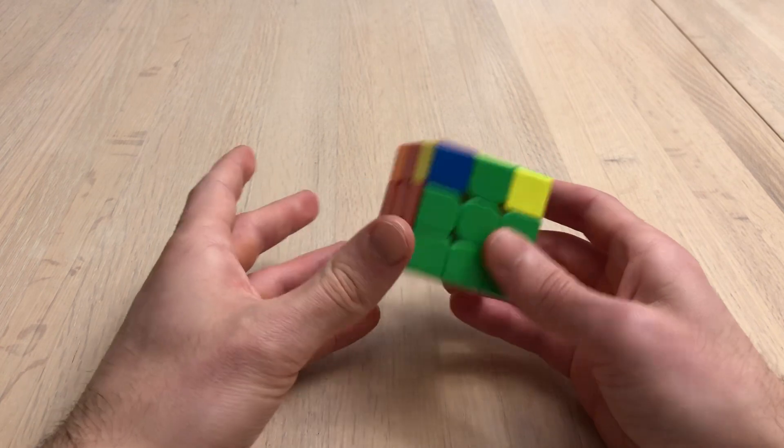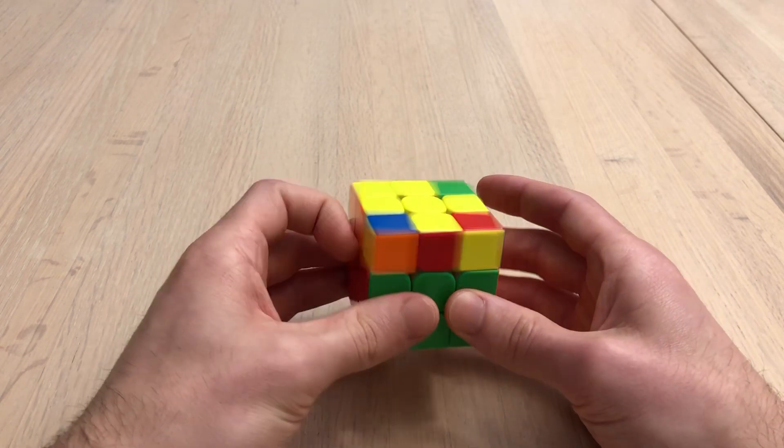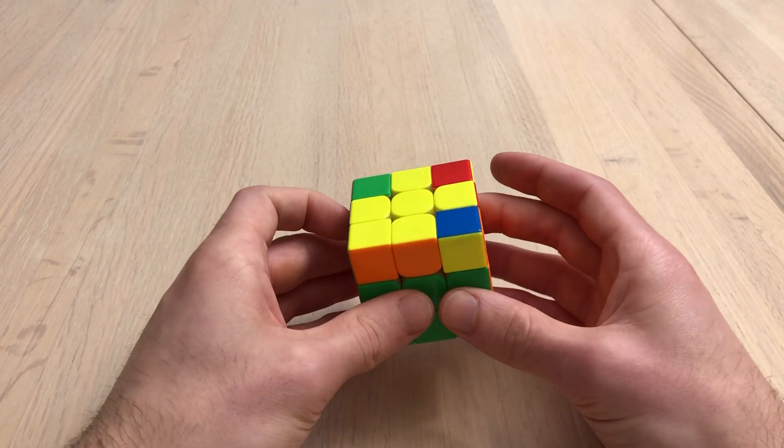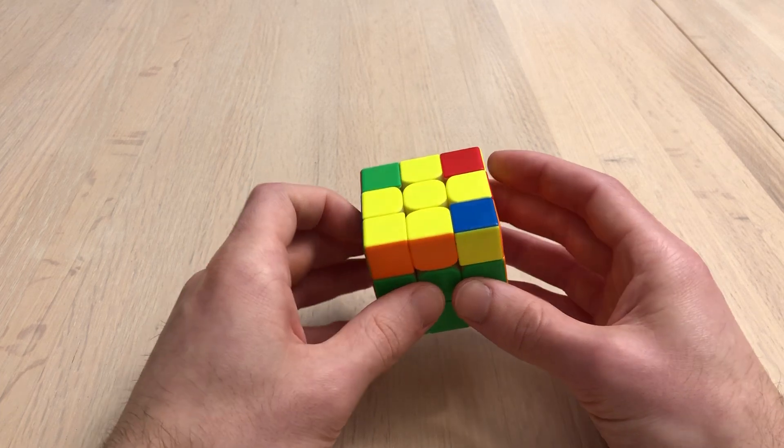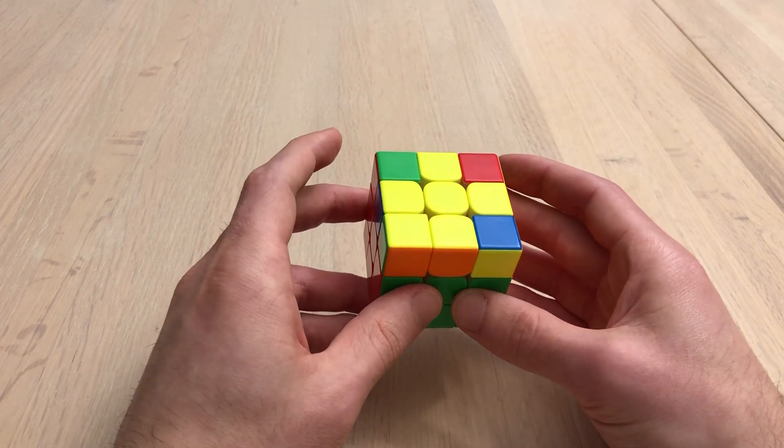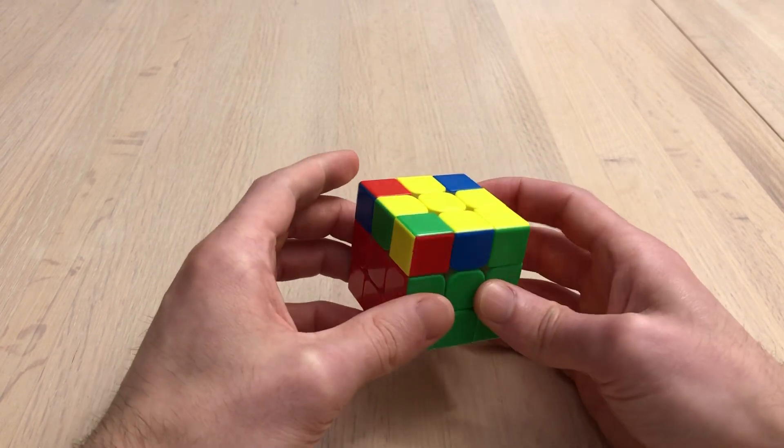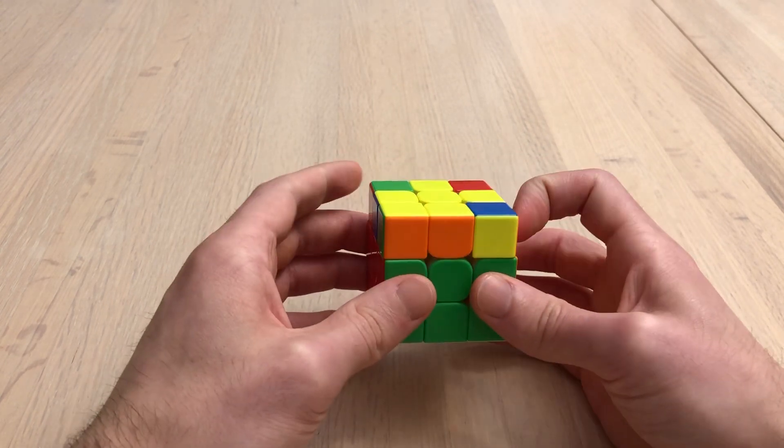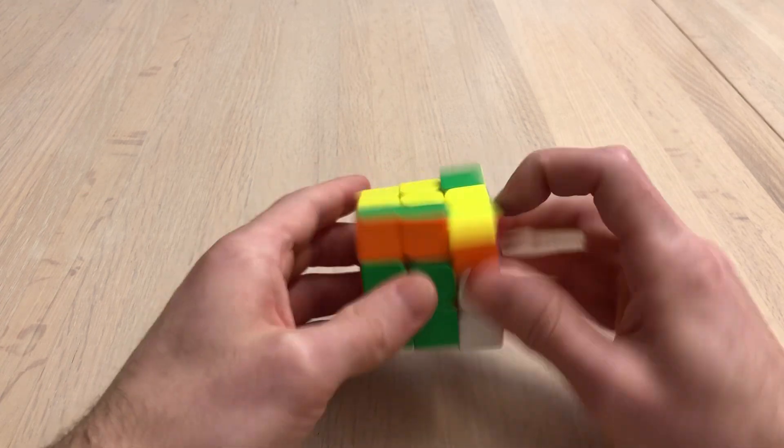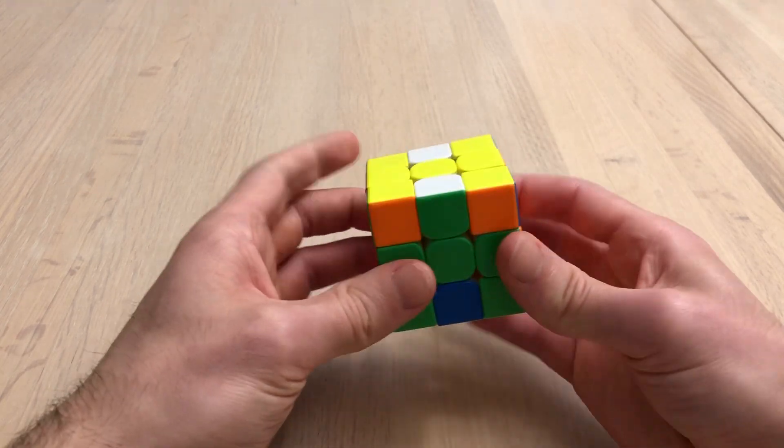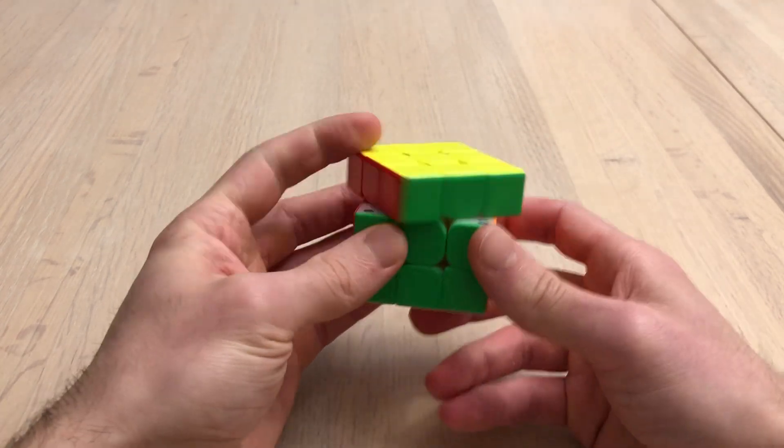So you want your solves to be as mindless as possible for the most part. If you have to think about, okay, what's this ZBLL? For too long? So if you're like going like that, trying to recognize the case, you could just do Sune and H-perm.